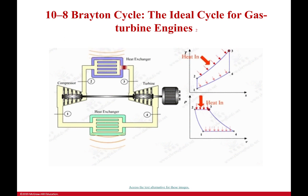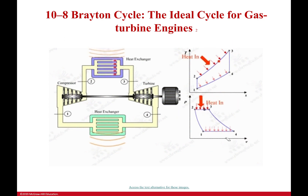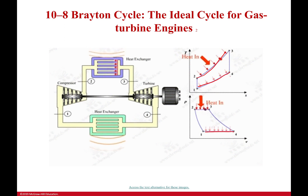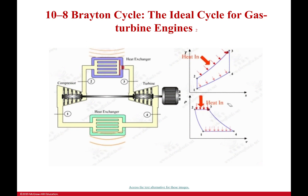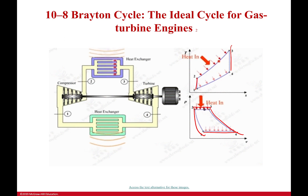Here is an example of the Brayton cycle running through it. We have our TS diagram and our PV diagram — I love these GIFs, they're absolutely fantastic. You can see we have our two isentropic processes: isentropic expansion and isentropic compression. One to two is our isentropic expansion on both diagrams, and then we have isentropic compression as well. Then we have our constant pressure process there, and it all looks good.